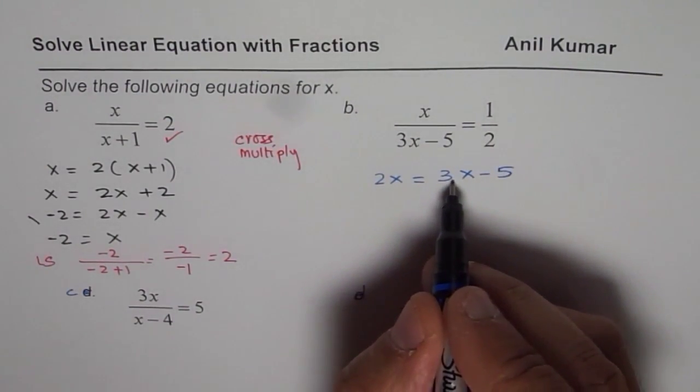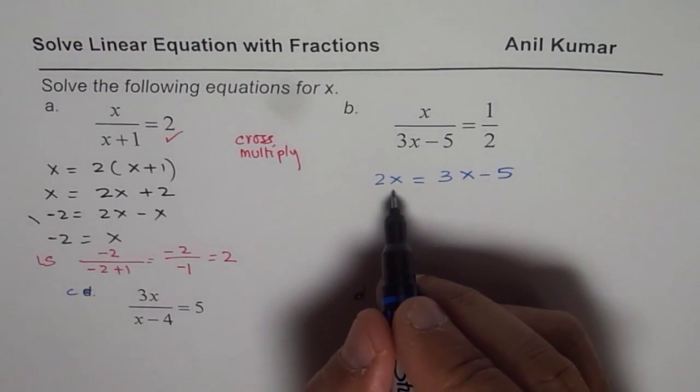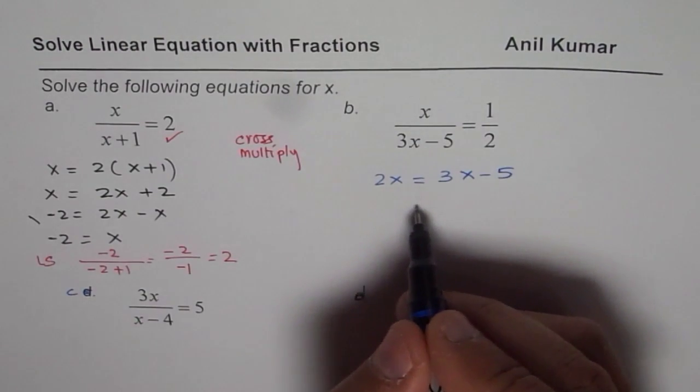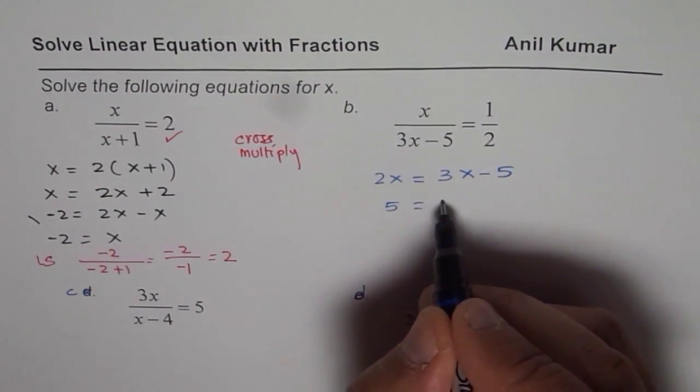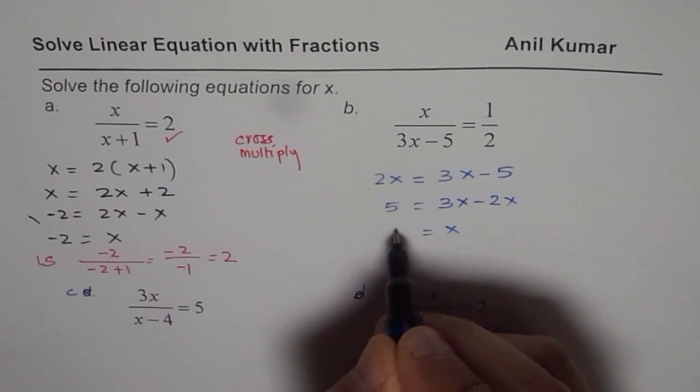Bring the variables together and constants on the left side. In this case, I'm bringing variables to the right side. So I can write this as 5 = 3x - 2x. That gives us x = 5.